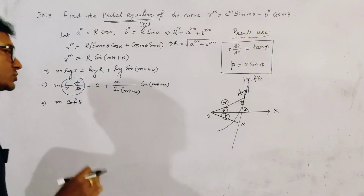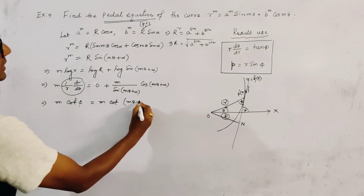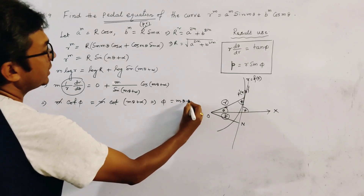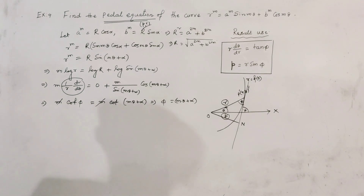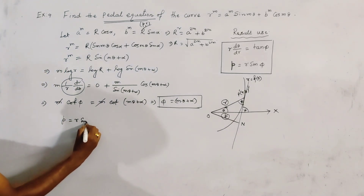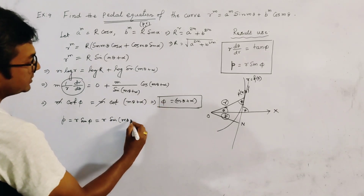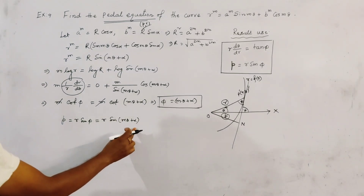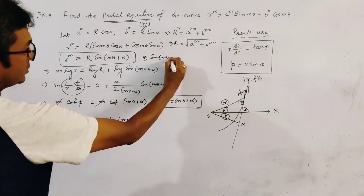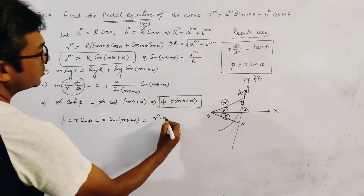This is cot(φ) equals m·cot(mθ + α), and the m's cancel out, so from here we get φ = mθ + α. Now, putting the value of φ in the second relation, we get p = r·sin(φ) = r·sin(mθ + α). From the earlier expression, sin(mθ + α) = r^m / R, so p = r · (r^m / R).